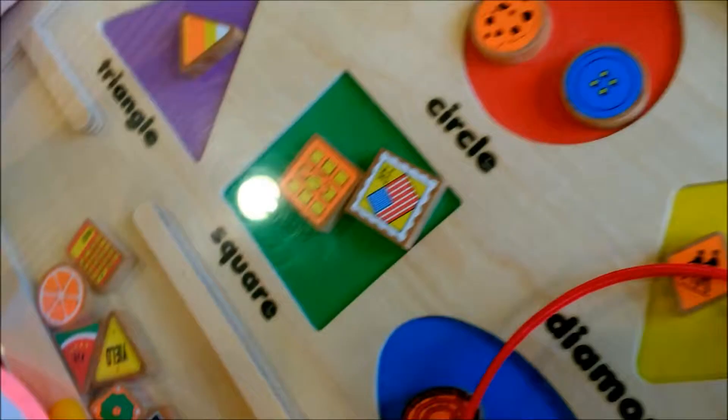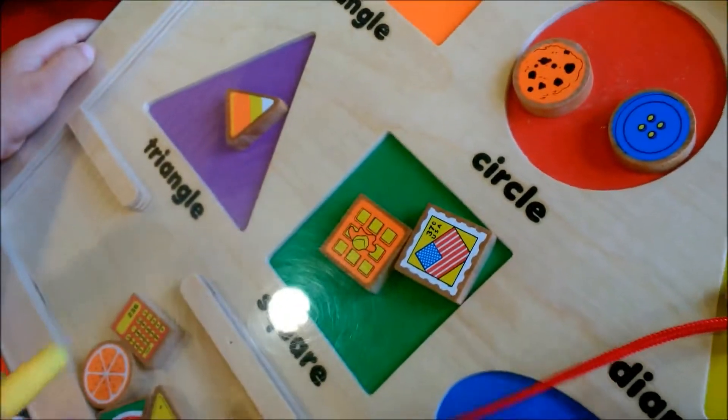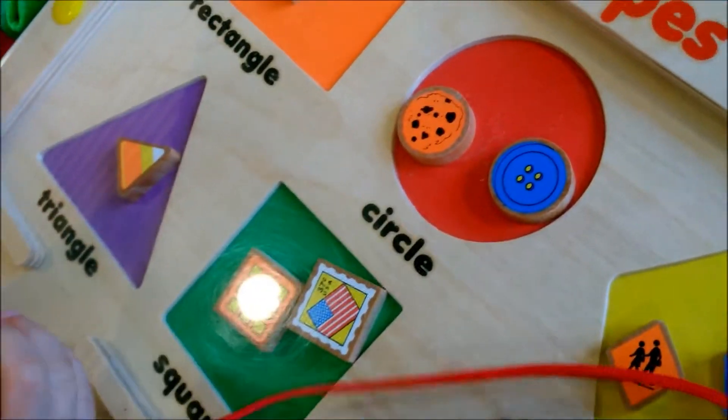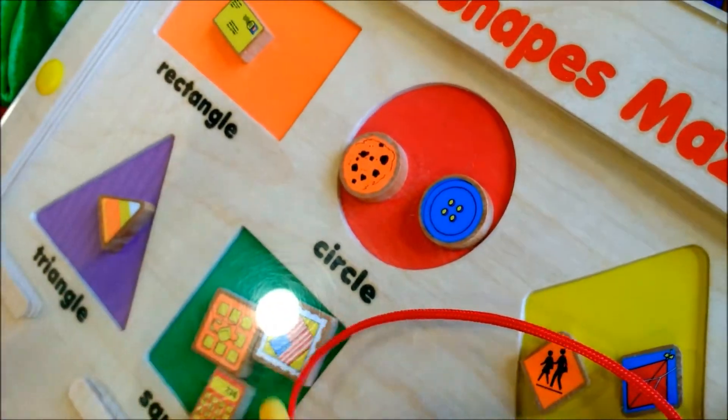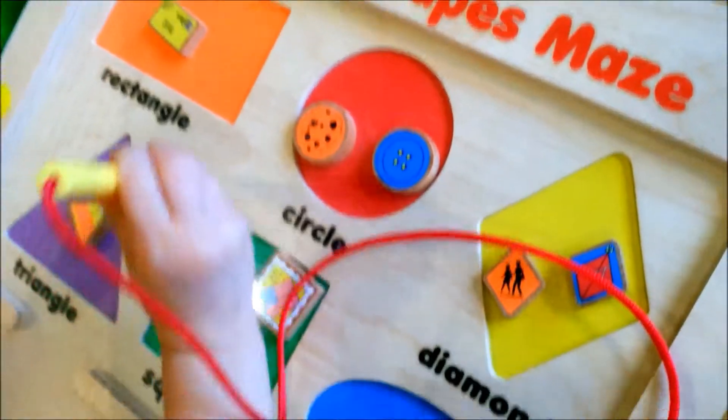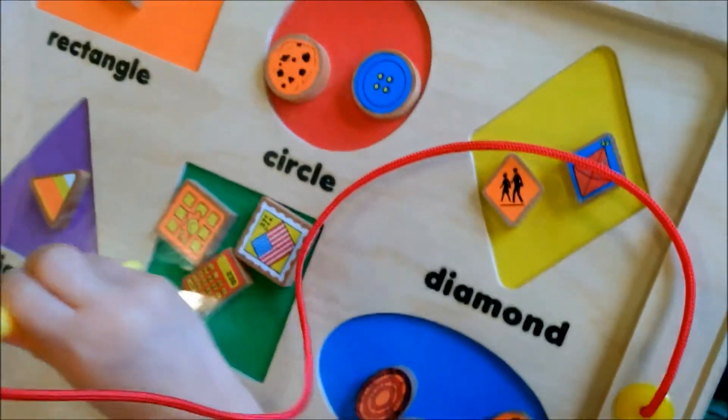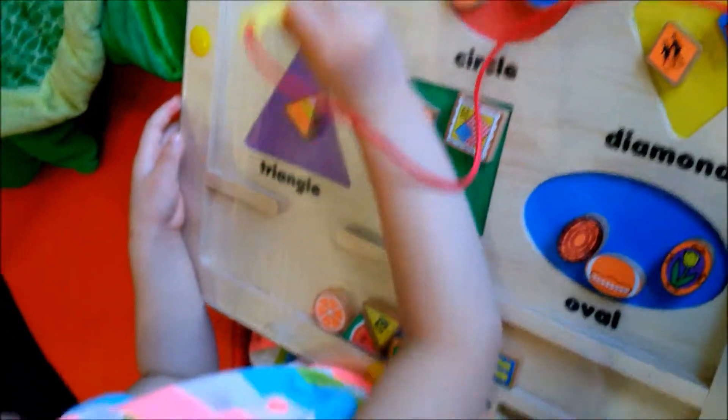And you get this magnetic pen. Just move the shape. It's made of wood. Wooden magnetic shapes maze. It's a pretty good learning toy.